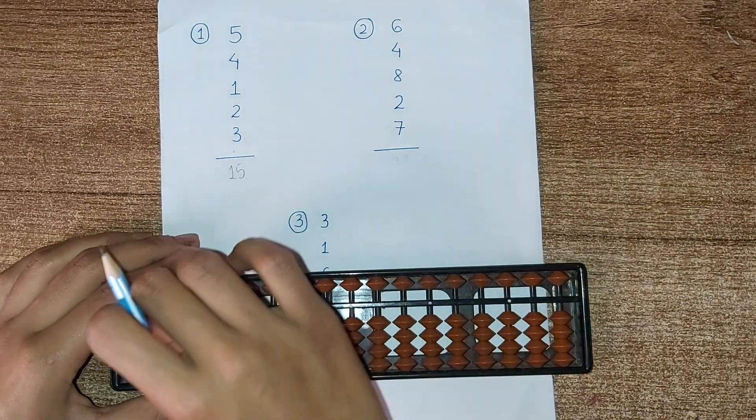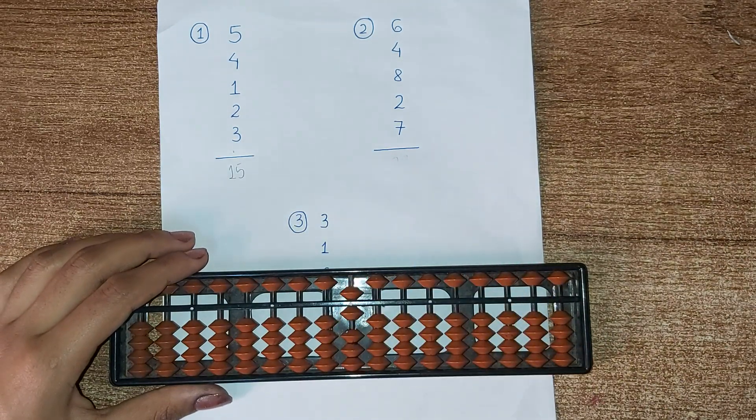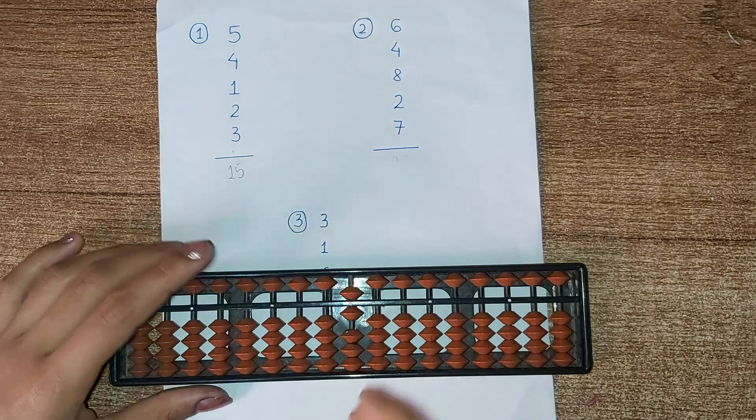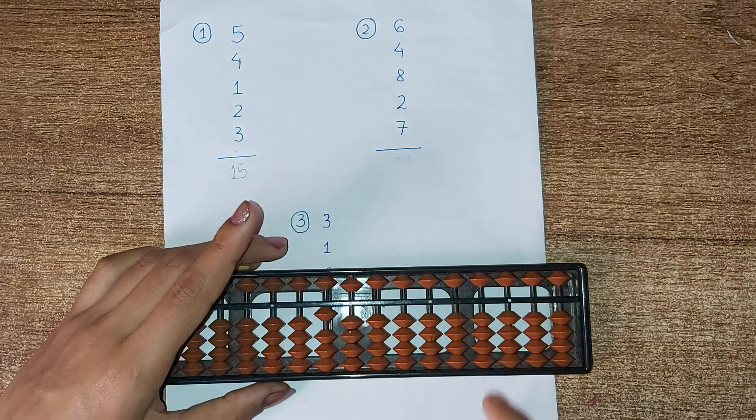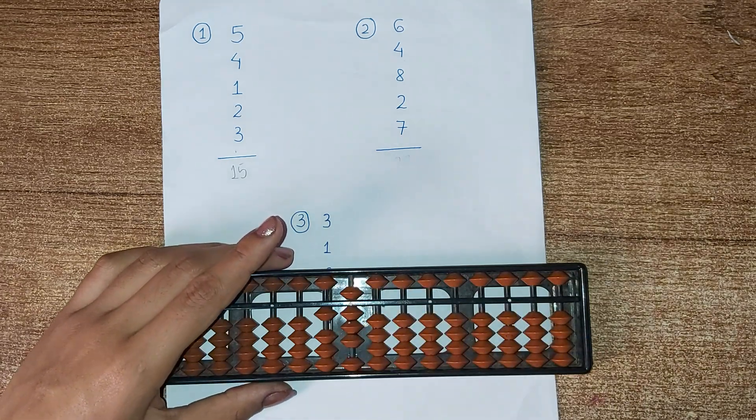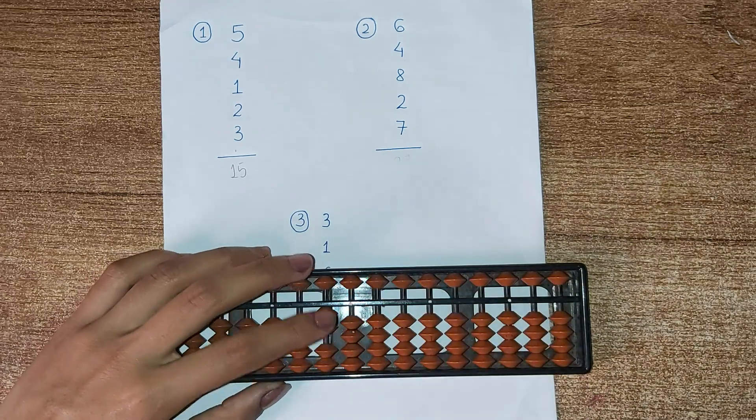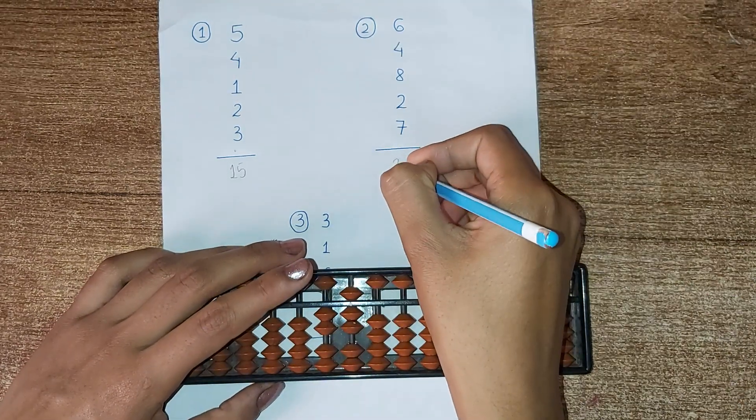Now number 2, 6, now 4. We don't have the beads available so we use the big friend formula for 4 that is minus 6 plus 10. Now 8 we can add directly. 2 means minus 8 plus 10. Then 7 also we can do it directly. The answer is 27.